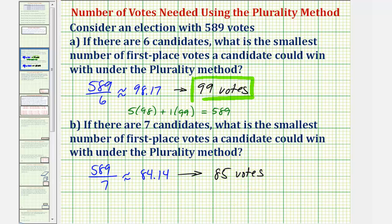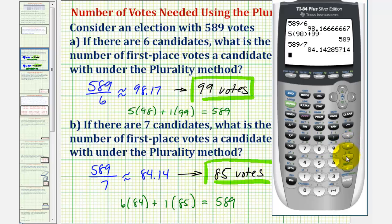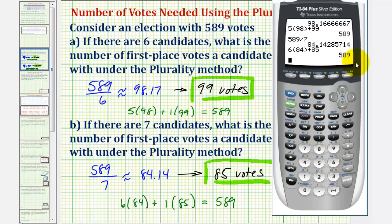Therefore, eighty-five votes is the smallest number of votes a candidate could win with under the plurality method. This indicates that six of the seven candidates would receive eighty-four votes, and only one candidate would receive eighty-five votes. Six times eighty-four plus one times eighty-five is equal to five hundred eighty-nine, as we see here.